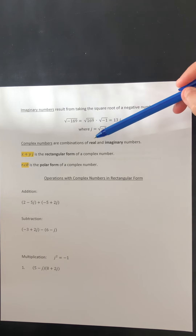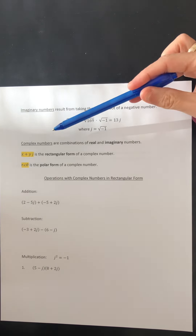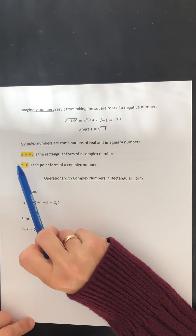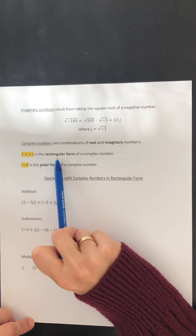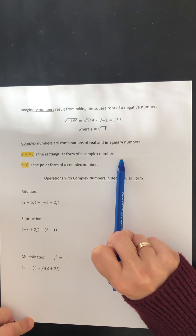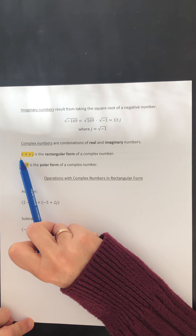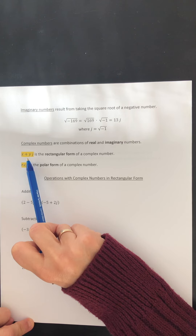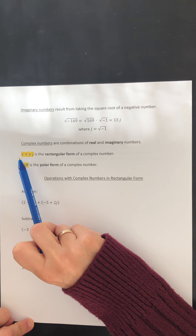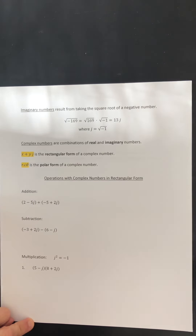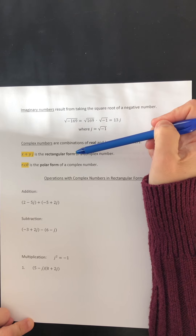When we have combinations of both real and imaginary numbers, these numbers are called complex. We can see that combination very clearly when we write the rectangular form of a complex number. In rectangular form, we have the sum of x and yj, where x is a real number and yj is an imaginary number.